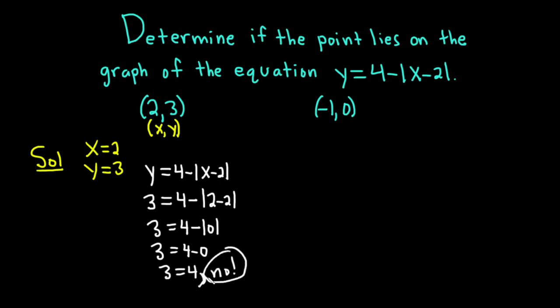If it's true then the answer is yes. Okay so again determine if a point lies in the graph of an equation. All you do is you take the coordinates, you take the x and the y and you plug it into your equation like we did here. y is 3, x is 2. And if you get something that's true then the answer is yes. In this case 3 is equal to 4 that's false so the answer is no.